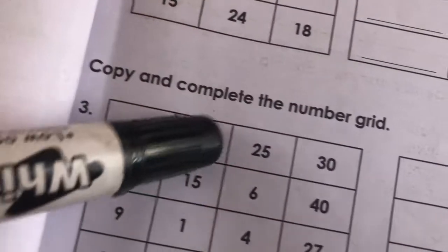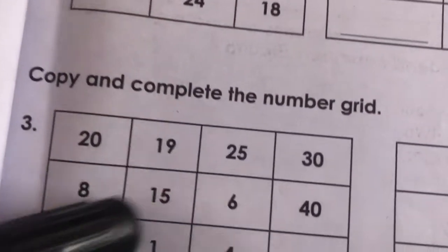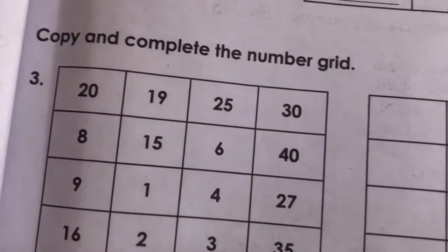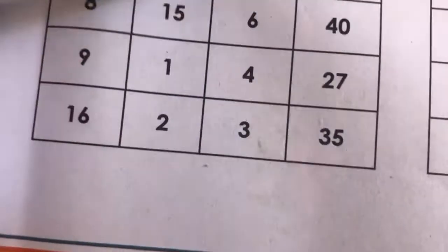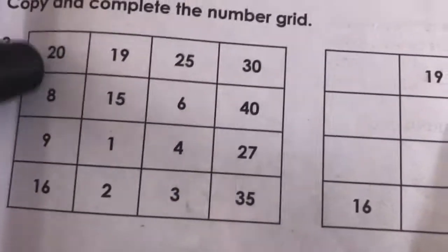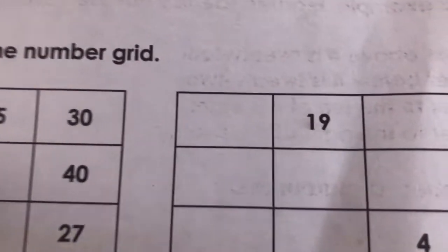The last one we have. Copy and complete the number grid. We have 20, 19, 25, up to 35. They are mixed up numbers. So, as you see it here, you copy them here. The first number here is 20. But in the box here, they didn't write anything, but they wrote the 19. So, surely you write your 20.